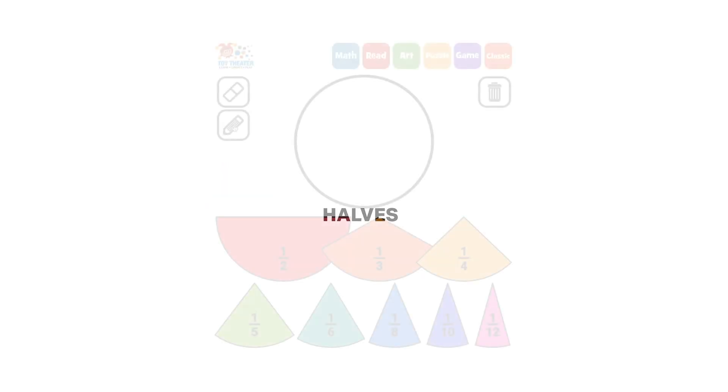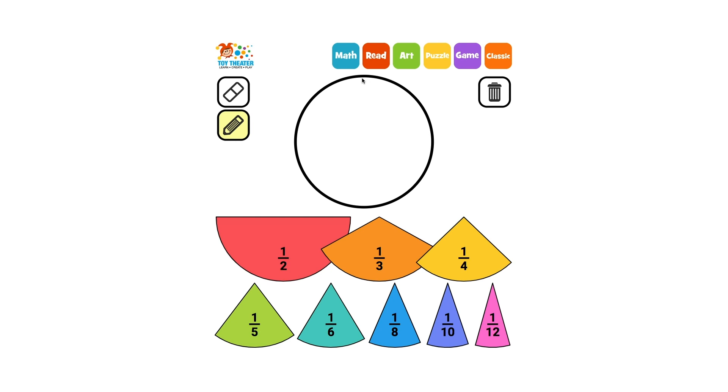Let's partition a circle into equal shares. Let's start with halves. We can draw a line down the middle of the circle and create two equal shares of the circle. Each one is a half. Two halves make one whole circle.